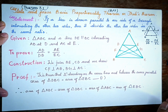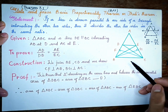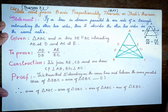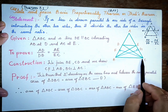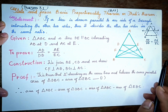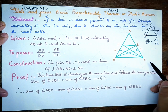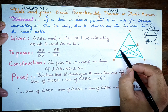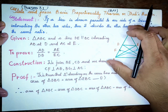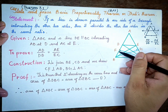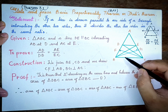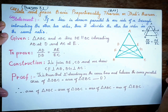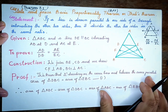For the construction, we join B and E. We also join C and D. Then DM is perpendicular to AB, and EN is perpendicular to AC.